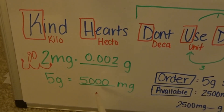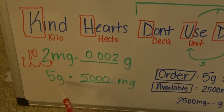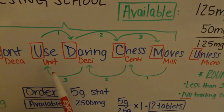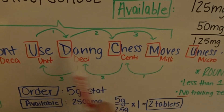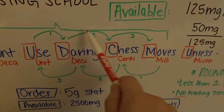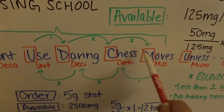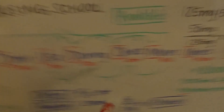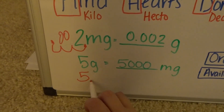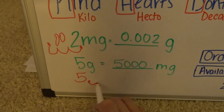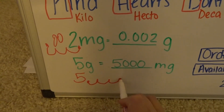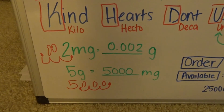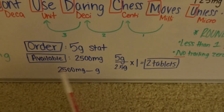If 5 grams equals how many milligrams? To figure that out, I find my grams — grams is a base unit. We're trying to go to milli, so we're going from unit to deci, deci to centi, centi to milli: 1, 2, 3, and we're moving to the right. So the decimal moves to the right three places: 1, 2, 3. Fill in 1, 2, 3. Now you have 5 grams equals 5,000 milligrams.